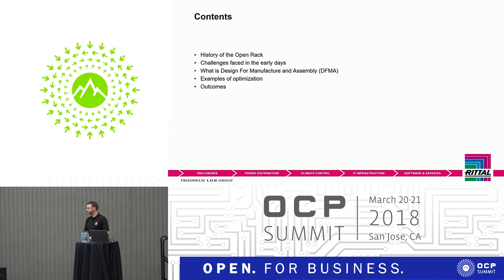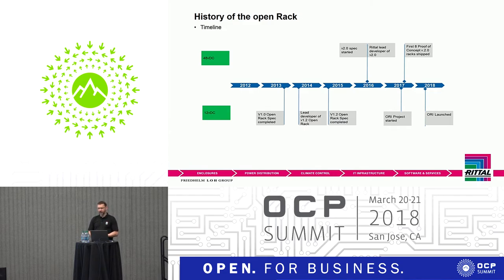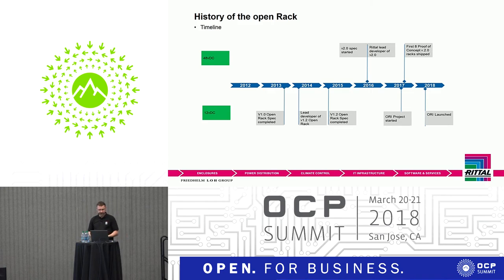Looking at the history of open rack: starting from end of 2011/2012 with the creation of the v1 open rack spec, finalized in 2013 — we worked closely with Facebook to help define that. Then in 2014, v1.2 was started and went through into 2015 when it was finally released to market, all based on the 12-volt architecture.